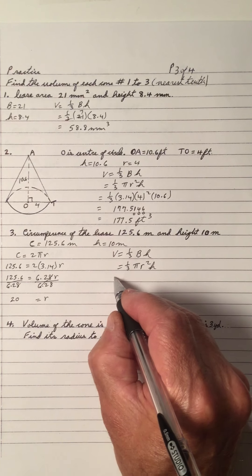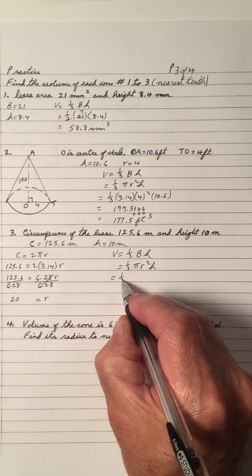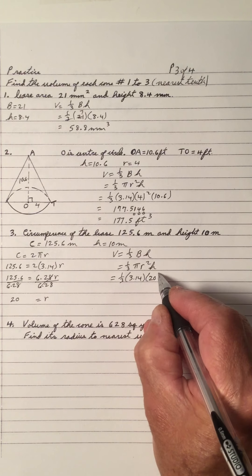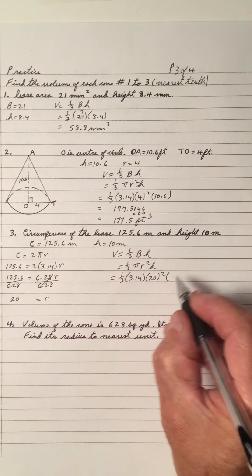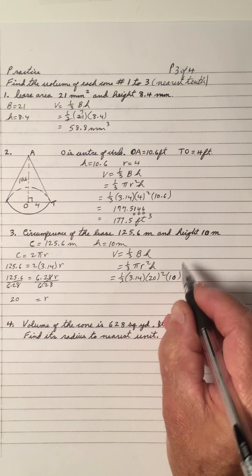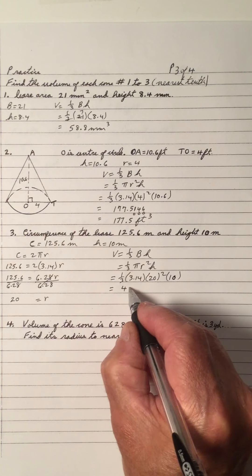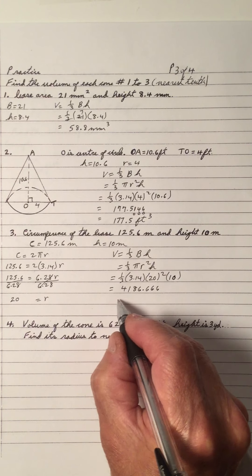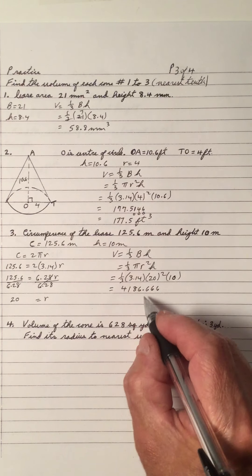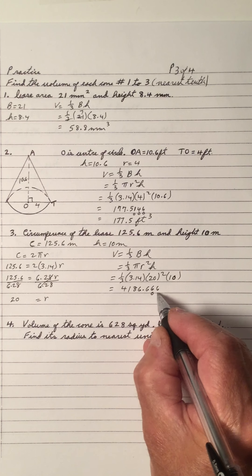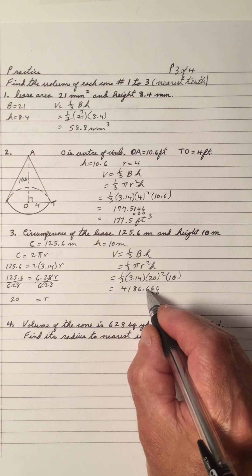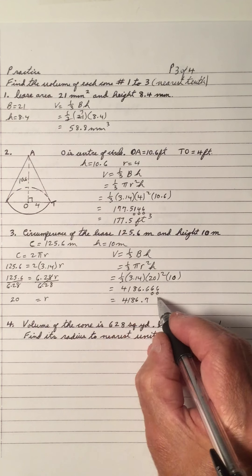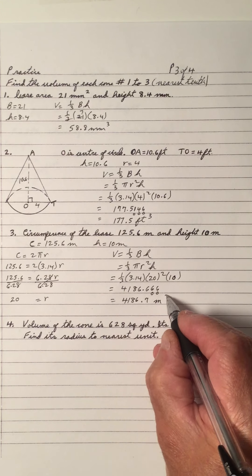Now let's go over to the volume formula. We've got one-third, π is 3.14, radius of 20 squared, and a height of 10. When you use the calculator and work that out, you get 4186.666. Rounding to the nearest tenth: the 6 is in the tenth place, and this number is 5 or greater, so we add 1 to the 6, getting a 7. The other digits are okay. So the answer is 4186.7 meters cubed.